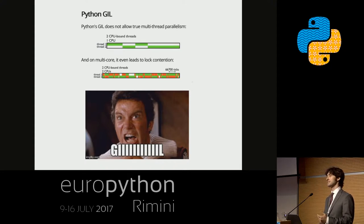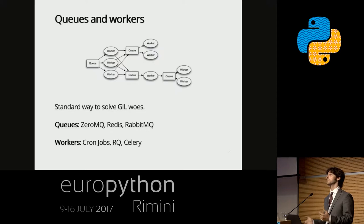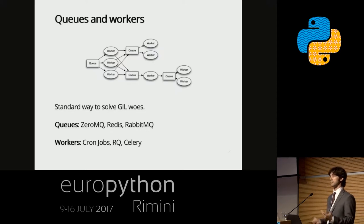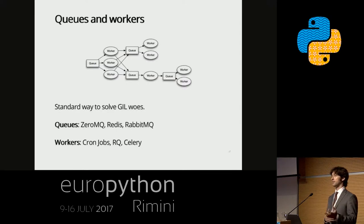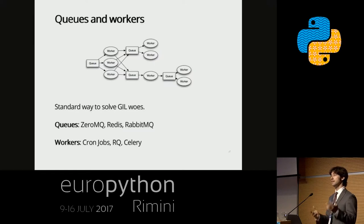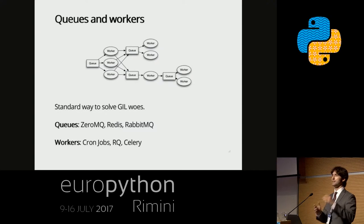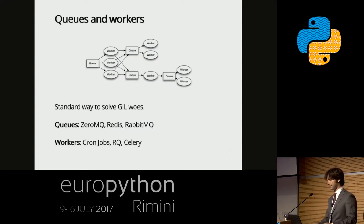Traditionally, the way this has been dealt with is with a queue-and-worker system, which bypasses the GIL. It's the traditional way to sidestep the GIL. You've got a queue like Redis or RabbitMQ, then you have workers like RQ or Celery that pull things off the queue, do some processing on them, push them into another queue, which another worker pulls from, and so on and so forth.